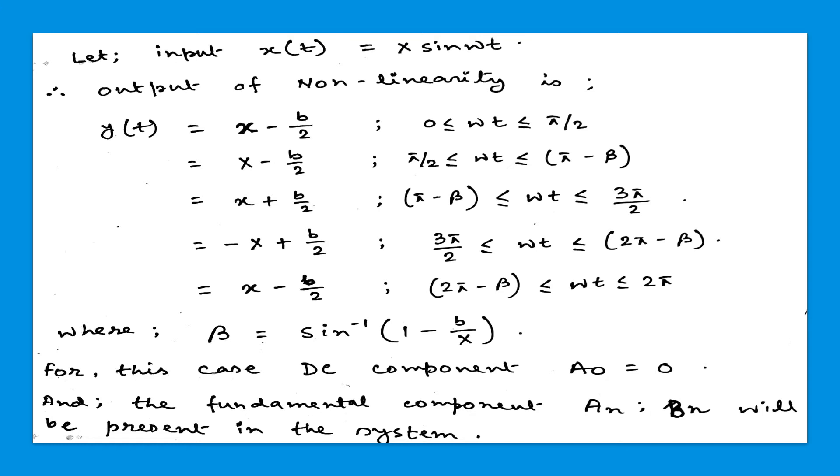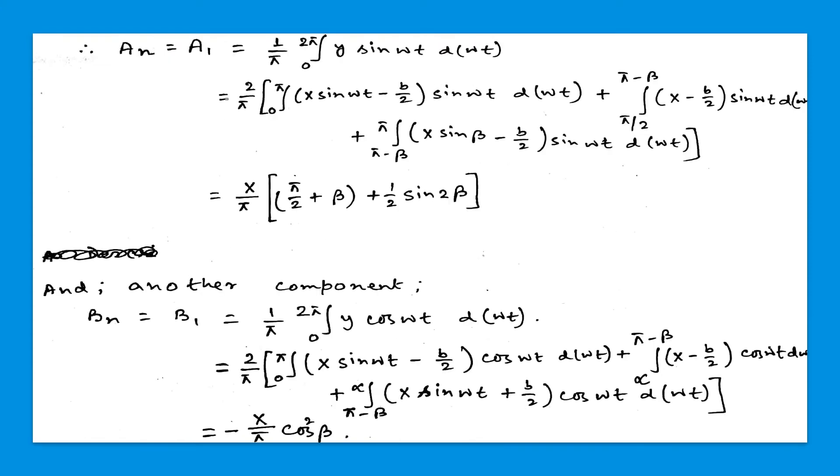For this case we know that the DC component A0 equals 0 if we break down this total function or total signal by Fourier expression. And the fundamental components An and Bn will be present in this system. For backlash nonlinearity we can see that odd harmonics and even harmonics both are present in the system. So for this case we're just taking the first harmonics or first fundamental components to get the Fourier expression.